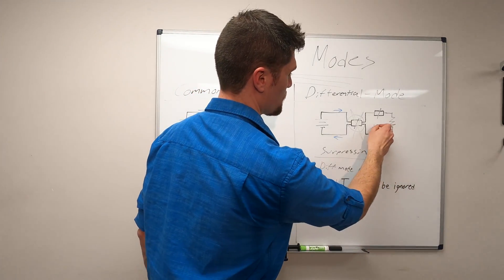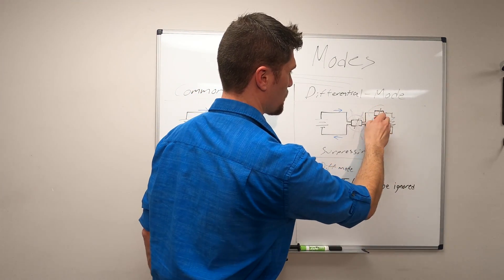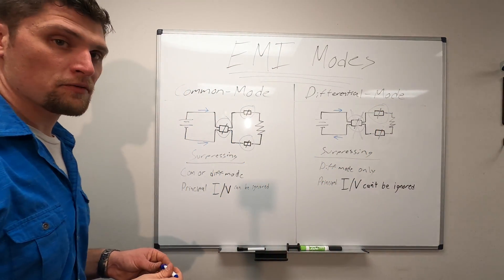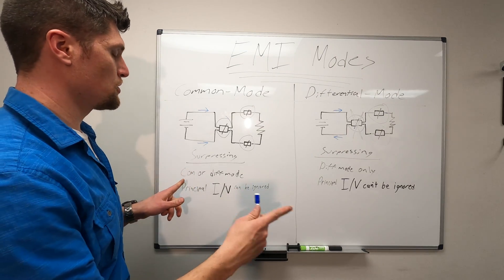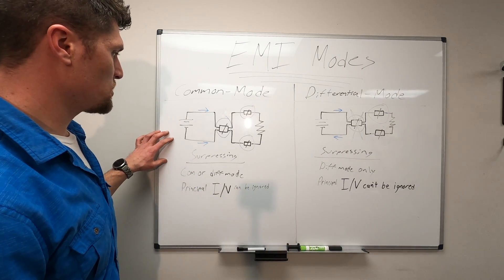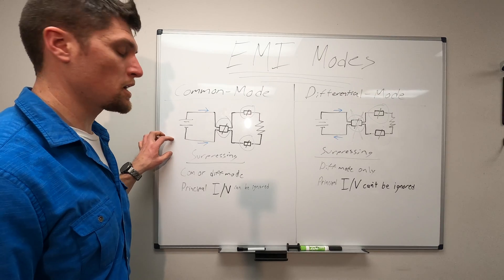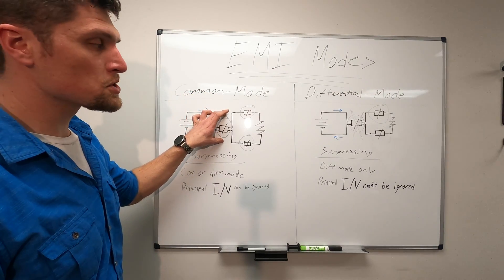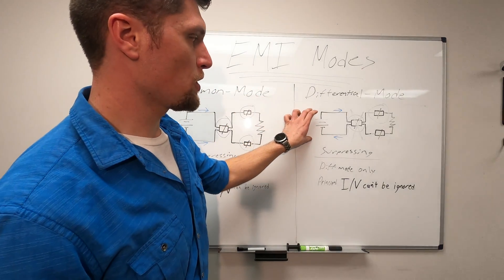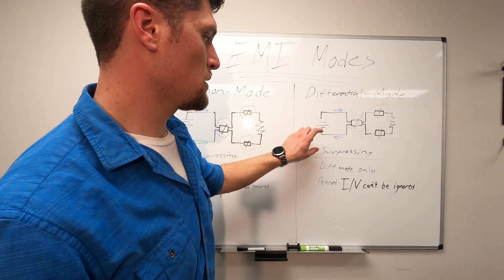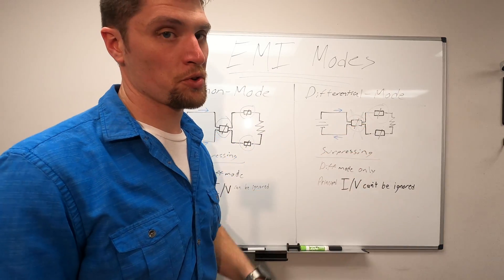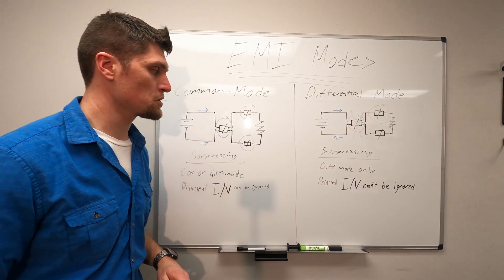However, these two are. So when we're using ferrite for suppressing EMI in these two different modes, common mode can be suppressed either differentially or in a common mode sense. Differential mode EMI will only be suppressed by differential mode devices within that circuit.